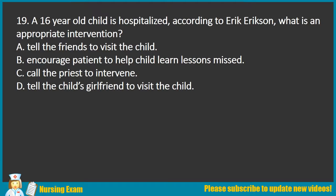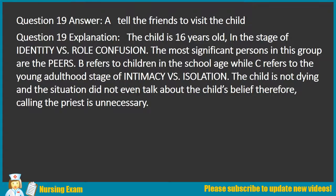Question 19. A 16-year-old child is hospitalized. According to Erikson, what is an appropriate intervention? A. Tell the friends to visit the child. B. Encourage parents to help the child learn lessons missed. C. Call the priest to intervene. D. Tell the child's girlfriend to visit. Answer: A. Tell the friends to visit the child. Explanation: The child is 16 years old, in the stage of identity versus role confusion. The most significant persons in this stage are peers. Option B refers to school-age children, while C refers to the young adulthood stage of intimacy versus isolation. Calling the priest is unnecessary as the child is not dying.